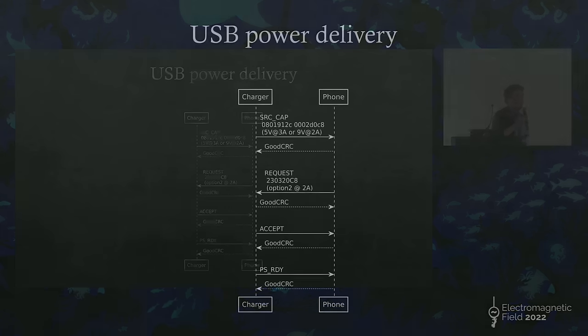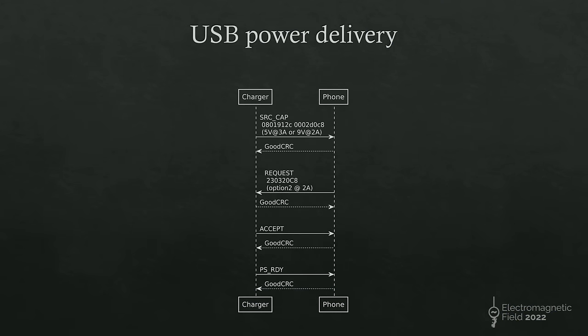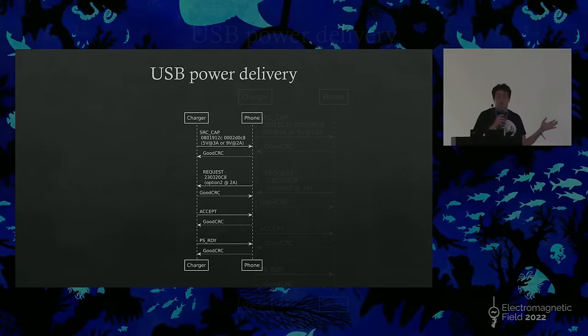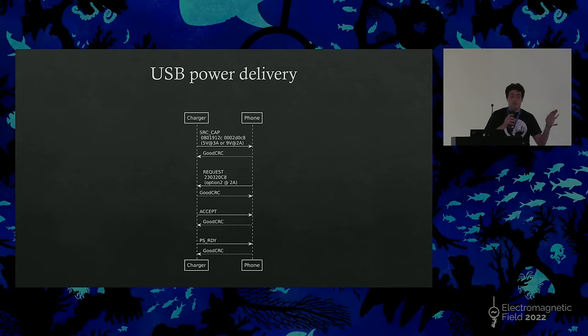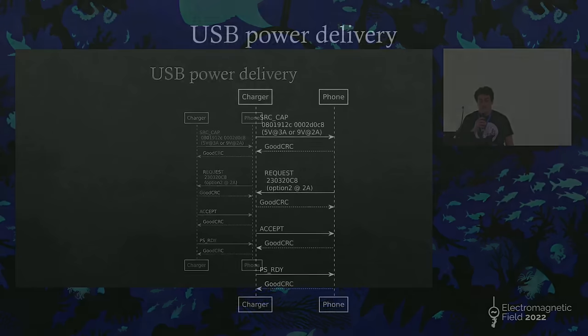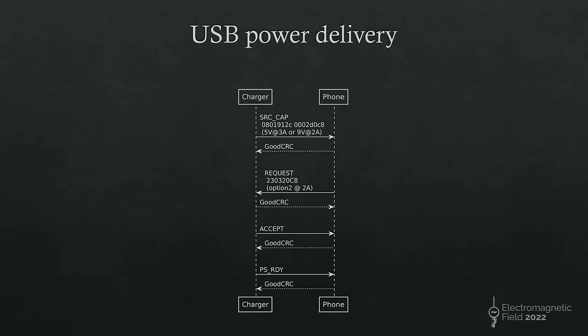So now we've sort of covered the basic communications channel, which is an analog voltage line. As you want to start to go into the more advanced features, you need to use something called USB power delivery. So even though it's power delivering the title, it's also the method you use to negotiate video methods, data methods, and similar. So on the screen, we've actually got the communications between my phone and my charger that I captured. And effectively, the charger says to the phone over the CC line, I can do 5 volt at 3 amp or 9 volt at 2 amp. The phone then requests the higher power option. The charger accepts that, does the transition, and then confirms.